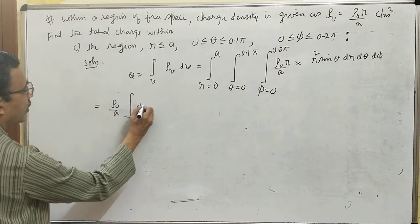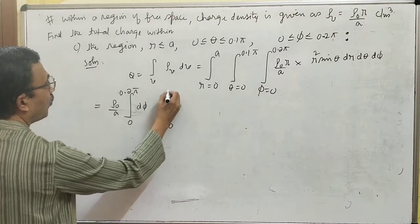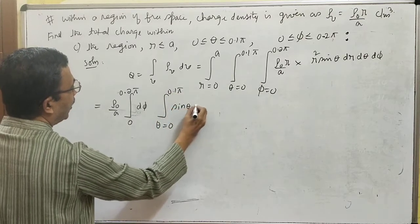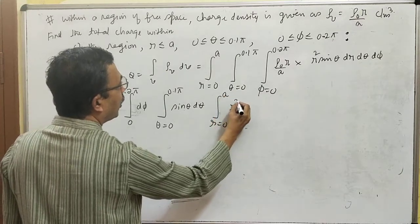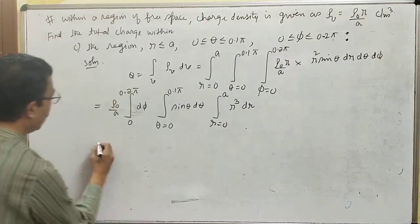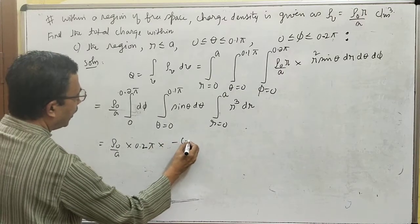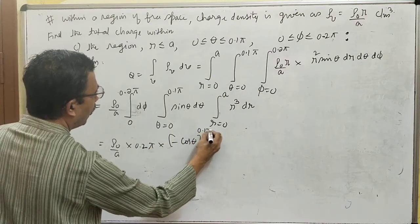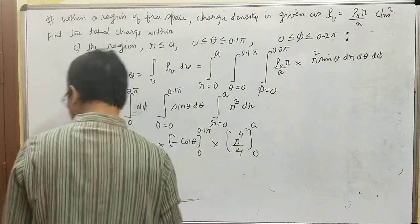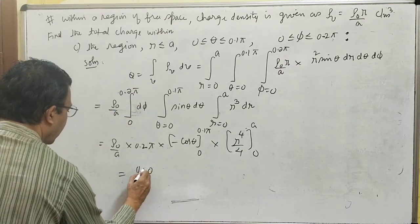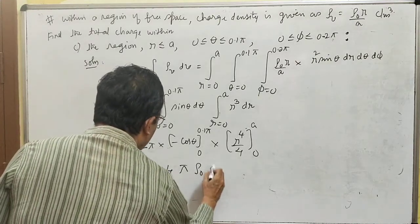This becomes (ρ₀/a) × 0.2π × ∫sinθ dθ from 0 to 0.1π × ∫r³ dr from 0 to a. Evaluating: (ρ₀/a) × 0.2π × [−cosθ from 0 to 0.1π] × [r⁴/4 from 0 to a]. Substituting the limits gives the answer Q = 0.0024π ρ₀ a³ coulombs.